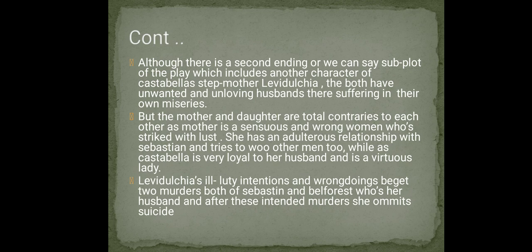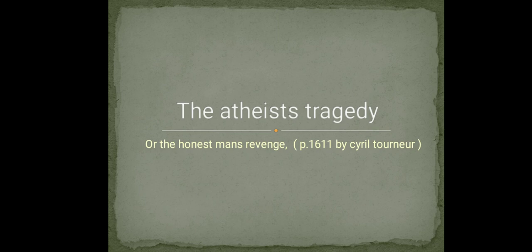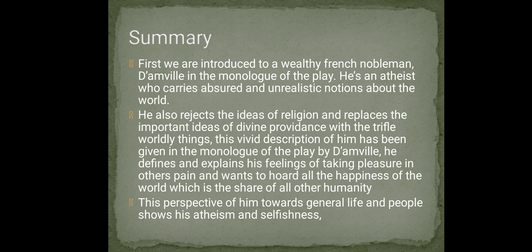Now let me analyse these slides one by one. This Atheist's Tragedy involves two character threads: the atheist, prominently displayed by the title, is D'Amville, who dies at last. And there is the honest man's revenge — the honest man being Charlemont, who is on a military mission. The first slide introduces D'Amville as a very ill-intended character with great animosity towards his nephew and his brother Montefiaris, Baron Belforest.